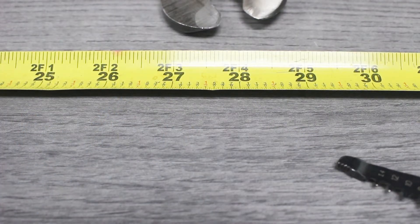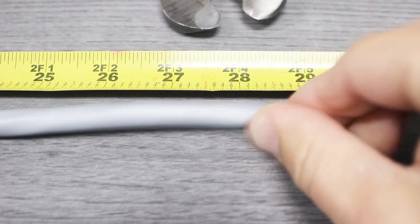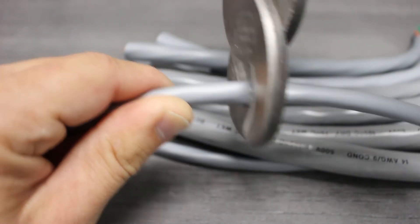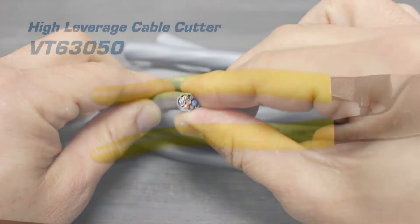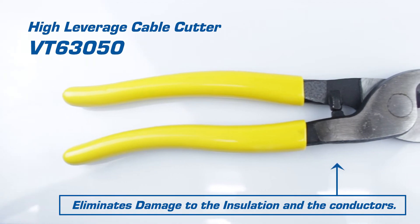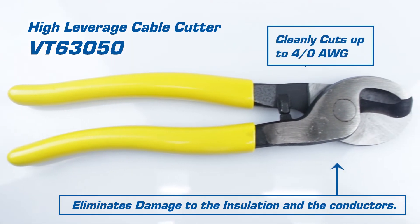The first step is to measure the cable to the correct length based on the job. Make sure to add at least an extra inch. With our measurement checked, we'll use the cable cutters to cleanly slice through the cable in one clean motion. Our high leverage cable cutter is built to eliminate damage to the conductor and handle up to four aught cable.